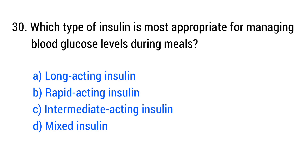Question number 30. Which type of insulin is most appropriate for managing blood glucose levels during meals? The right answer is option B: Rapid-acting insulin.